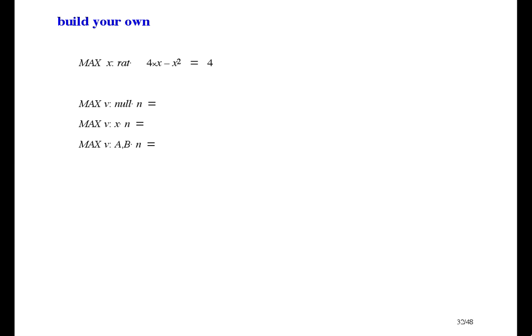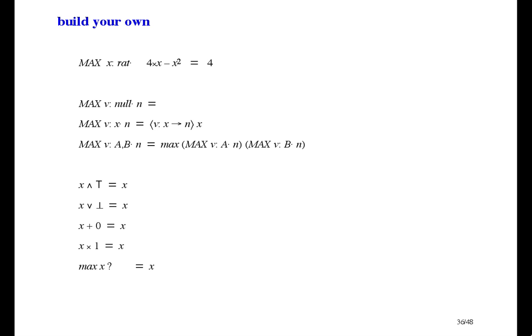To define max, we need to say what its effect is on the empty domain, on a one-element domain, and on a union of domains. The one-element domain is easy — it's the result of applying the function to that one element. The union domain is also easy: find the max over each part of the union and then take the max of those two results. But for the empty domain, we need an identity element such that the max of x and that element is always x, no matter what x is. It has to be less than or equal to all x — it has to be minus infinity. In a program with a loop for finding max, you would have to initialize a variable to the most negative number on your computer.